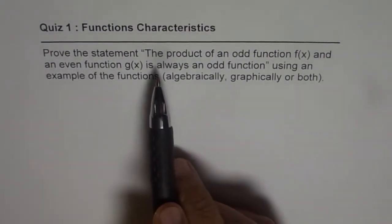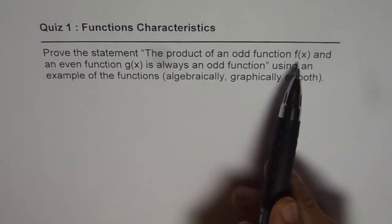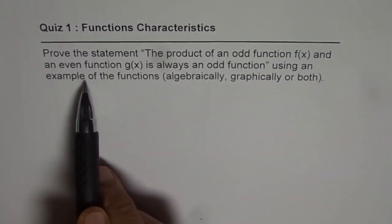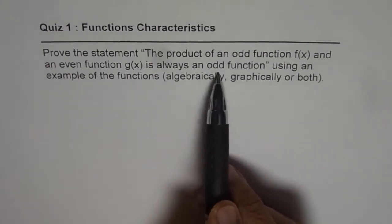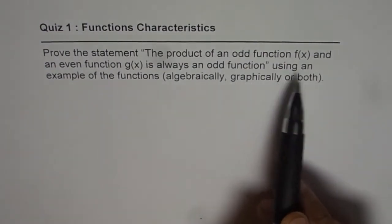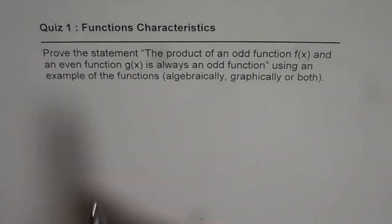Prove the statement: the product of an odd function f(x) and an even function g(x) is always an odd function. Using an example of the functions, algebraically, graphically or both.